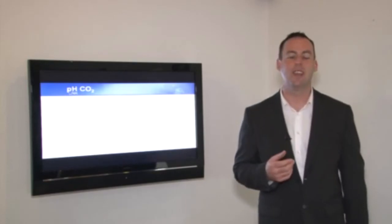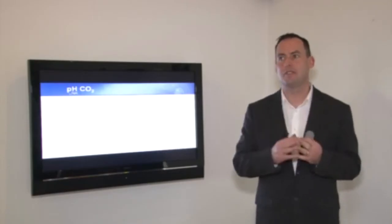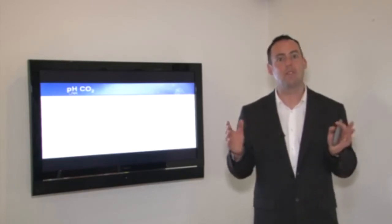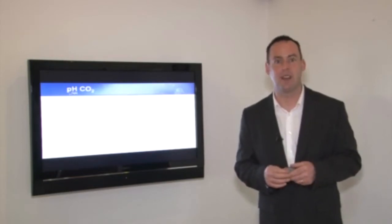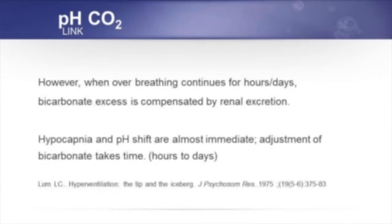By breathing too much we offload carbon dioxide, and as a result we're left with an excess of bicarbonate ion and a deficiency of hydrogen ion. The loss of hydrogen ion shifts pH in a more alkaline direction, but the blood always wants to bring it back to 7.365. If overbreathing is just for a short period of time, when breathing starts to decrease towards normal levels, carbon dioxide can accumulate and helps restore both CO2 and pH.